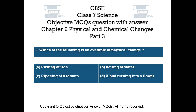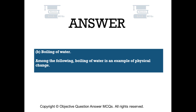Question number 9. Which of the following is an example of physical change? Option A rusting of iron, Option B boiling of water, Option C ripening of a tomato, Option D a bud turning into a flower. The right answer is Option B — boiling of water. Among the following, boiling of water is an example of physical change.